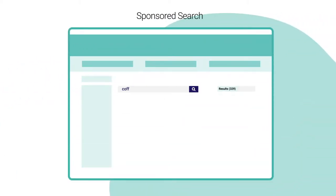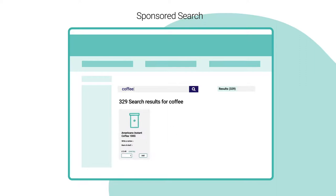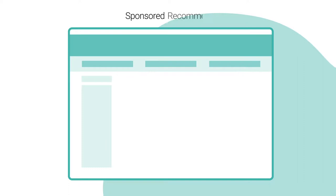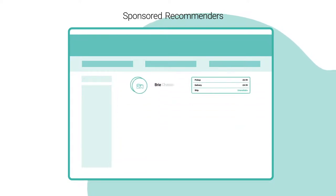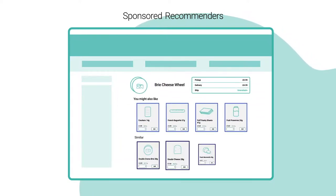Sponsored search uses keyword matching to intersperse relevant sponsored products alongside organic search results, while sponsored recommenders enables paid placements within specific sections of a retailer site or app and product pages for cross-sell and upsell opportunities.